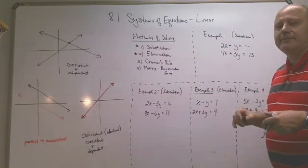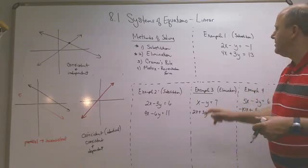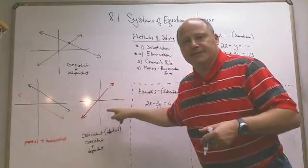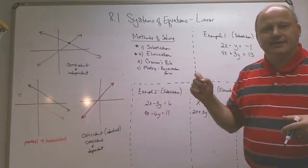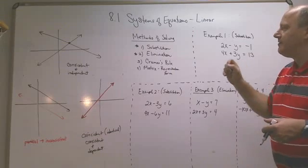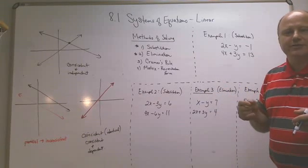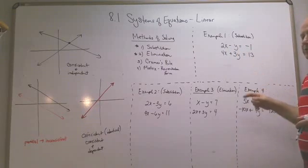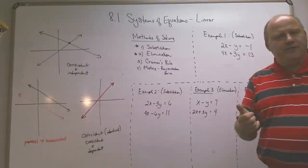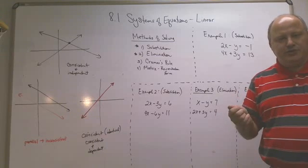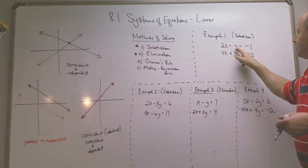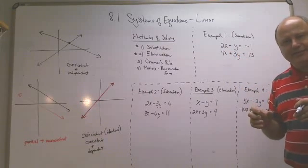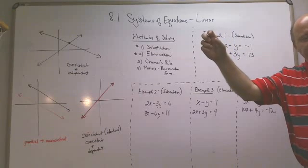Let's look at example one, solving by substitution. So this is a line and this is a line — they might cross, they might not, or it might be the same line. When you solve by substitution, you take one of the variables — it doesn't matter which one — and you solve for that letter. Then take that expression and put it into the second equation.